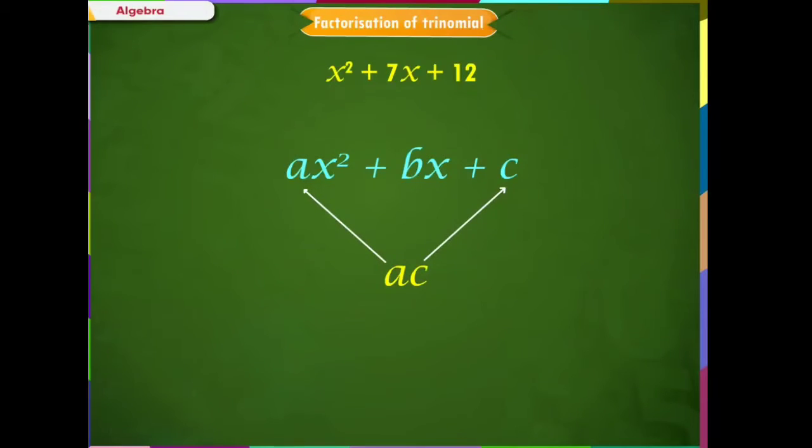Then, we take two such factors of ac which when added, we should get the middle term coefficient of x, that is b. We shall apply this technique to find the factors of our expression.